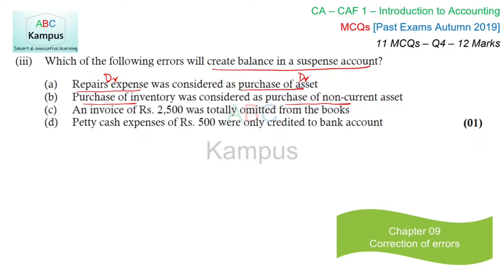Third: invoice of Rs. 2500 was totally omitted. Totally omitted means both the debit side and the credit side were omitted. When both sides are omitted, debits and credits are still equal — both are wrong and both are less, but still equal — so no suspense account is created. The last option: petty cash expense of Rs. 500 was only credited and not debited. This means the credit side increases and nothing is recorded on the debit side, so a suspense account balance will be created. Option D would be correct.